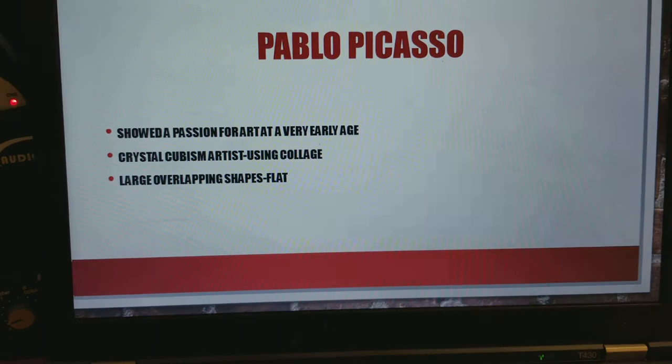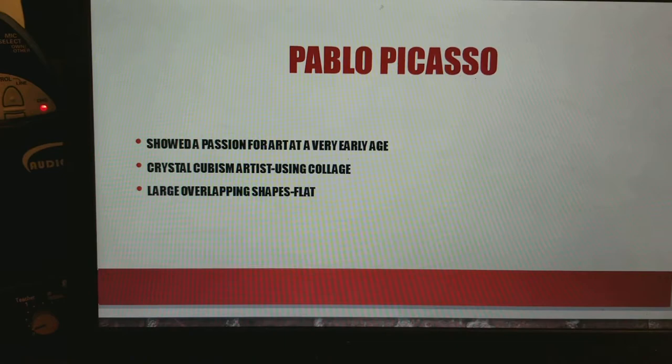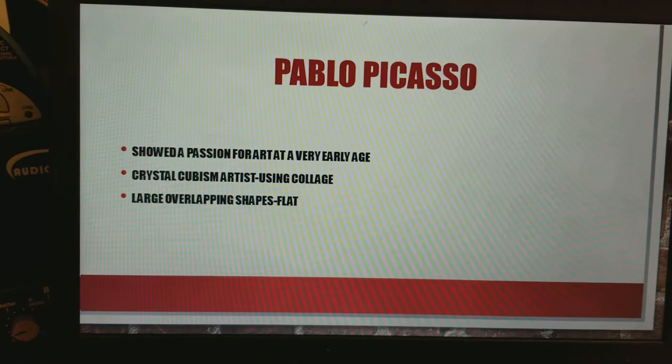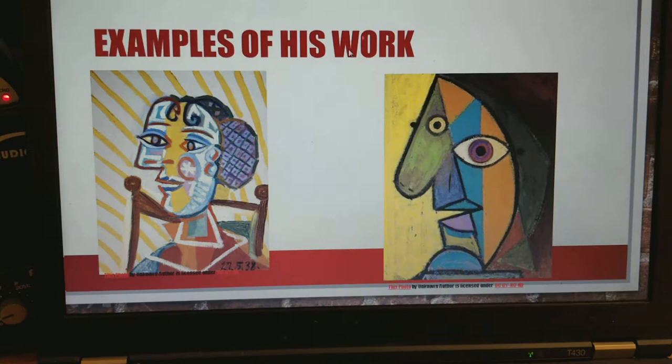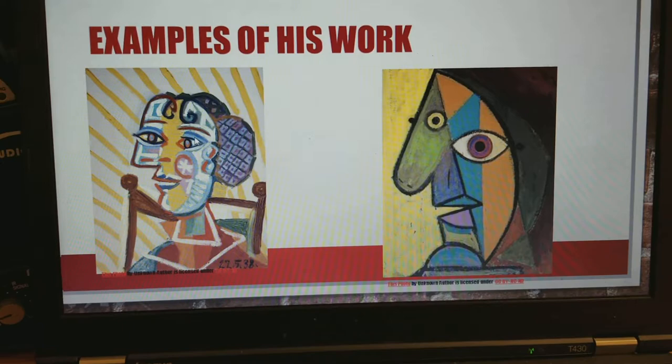Pablo Picasso showed a passion for art at a very early age. He used crystal cubism, which means he used geometric shapes or shapes with collage — large, overlapping pieces of paper — making his work very flat. I want you to notice how it's not really abstract because we know this is a person, but it is cubism because it's broken up into pieces. We have a large eye, a regular eye, and it's kind of silly to look at.